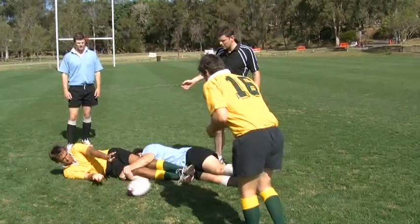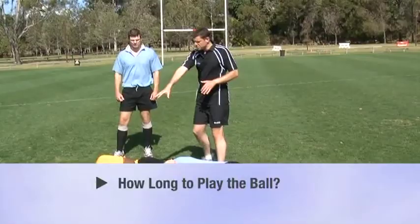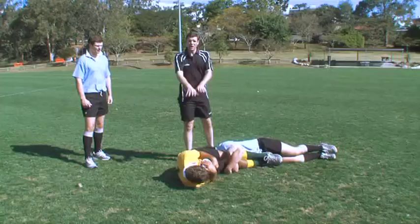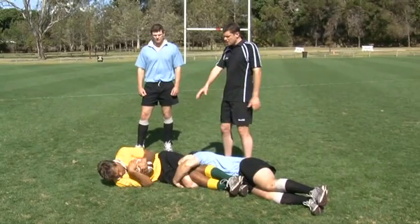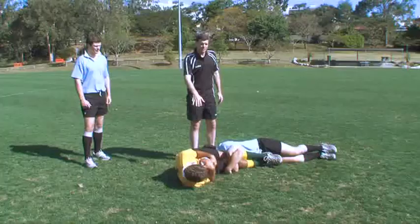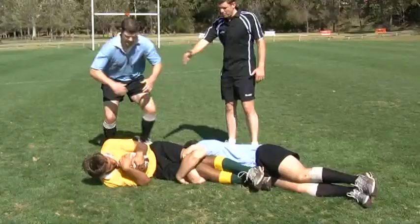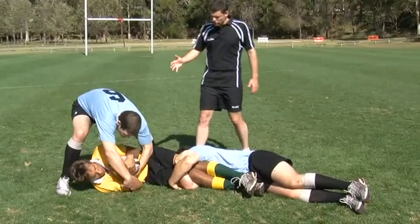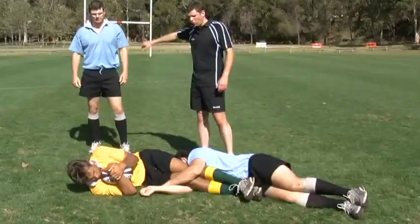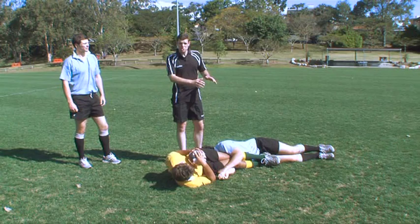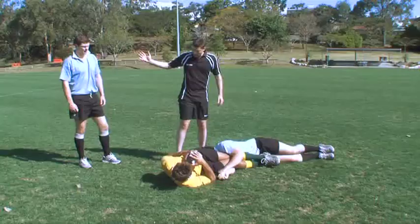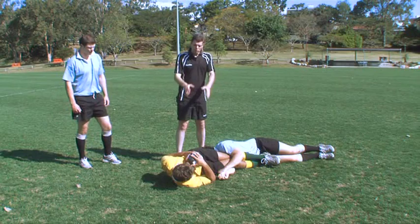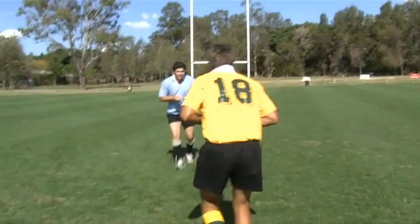The next question is how long does the tackled player have to actually play the ball? The law book says immediately, although a lot of people have different opinions about how long immediately is. Three seconds is often heard but that's not in the law book. What we look at is this: the player has as much time as it takes for there to be an opposing player on their feet attempting to go for the ball. So in a situation where a player from the opposing team is on their feet trying to contest the ball, this player has run out of time and has got to let go of the ball immediately. However where there's no opposing player trying to play the ball, the tackled player has a lot more time and a referee shouldn't be penalizing for no release if it's going to have no material effect on the game. If an opposing player is on his feet trying to go for the ball and he won't release, that's a penalty kick for no release. If he's in open space, the tackled player may also release the ball, get to his feet, pick the ball up and continue running.